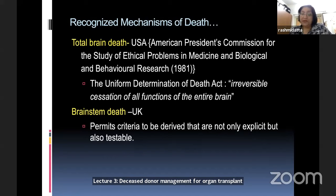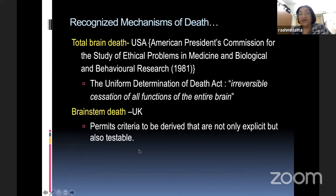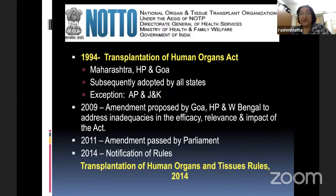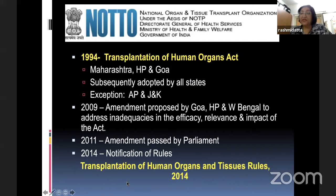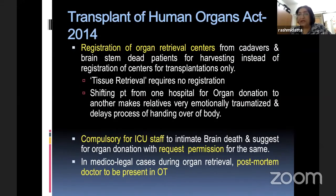In the Indian scenario, in 1994 there was the Transplant of Human Organs Act, and through the years amendments came. In 2014, the Transplant of Human Organs and Tissue Rules were made. Organ retrieval centres have been established, and it is now compulsory for ICU staff to intimate about brain death and suggest organ donations with permission. The transplant coordinator has now become mandatory, and authorization committees are formed to prevent any delay in getting the donation if relatives agree. Certification for brain death can now be made by ICU doctors, anesthesiologists, neurologists, or neurosurgeons.